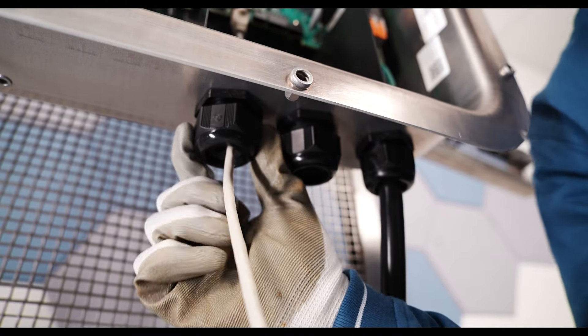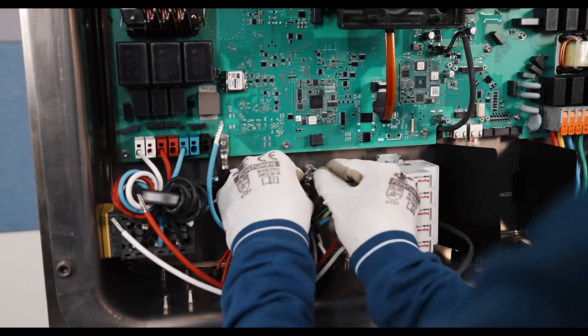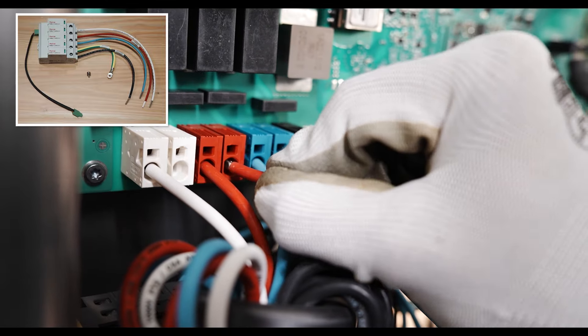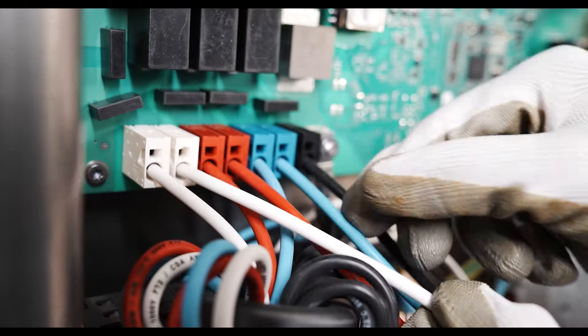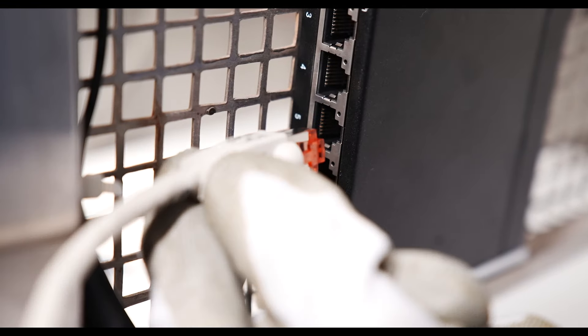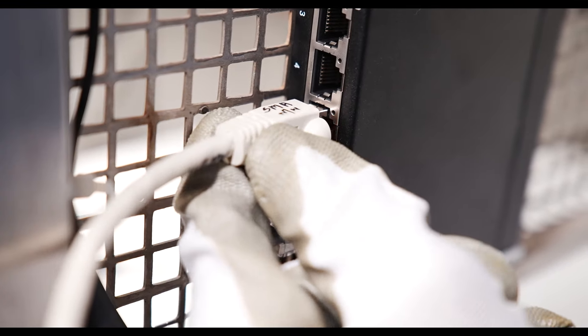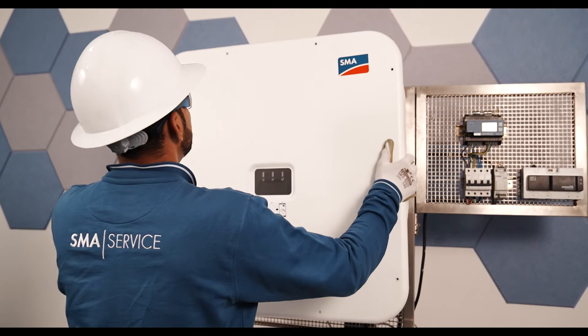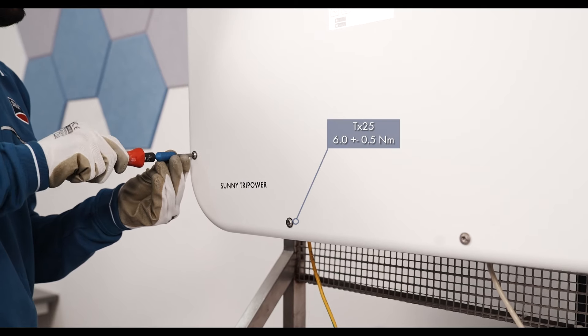This will secure the network cables in place. If the inverter is installed outdoors, install over-voltage protection for all the components in the network. If you would like to integrate the inverter into a local network, connect the other end of the network cable to the local network. Close the front cover of the inverter by tightening all screws.